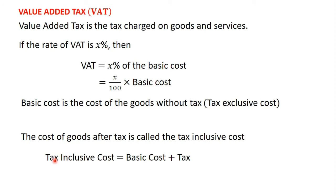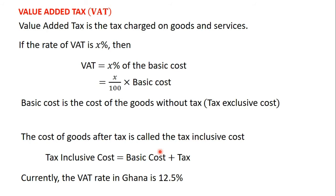To find the value-added tax on an item, it is equal to the rate of VAT times the basic cost of the item. If the rate of VAT is X percent, then the VAT is X divided by 100 times the basic cost — that is the tax-exclusive cost. After finding the VAT and adding it to the basic cost, you get the tax-inclusive cost. Currently in Ghana, the VAT rate is 12.5 percent.